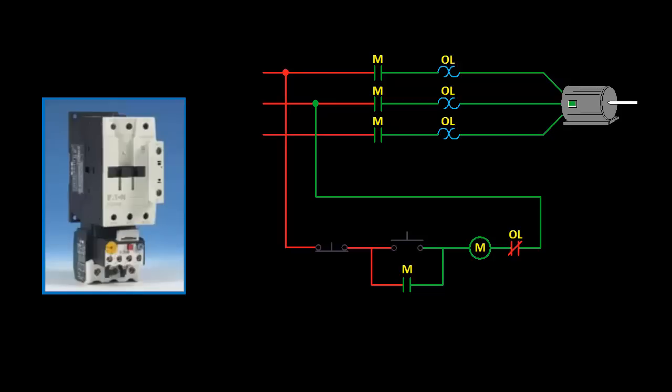Since everything is in its normal state right now, the normally closed contact is red, while all the normally open contacts are green. So when I hit the start button, the contactor gets energized and closes the contacts in the power circuit, and the motor current is flowing through this heating element and to the motor.